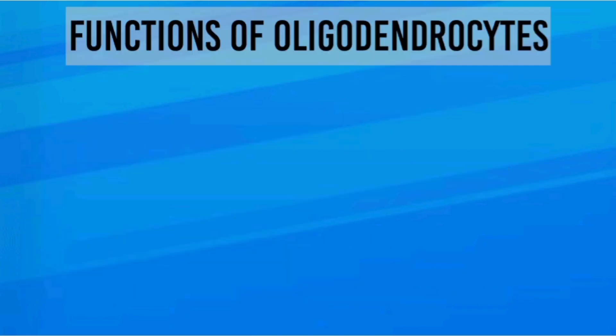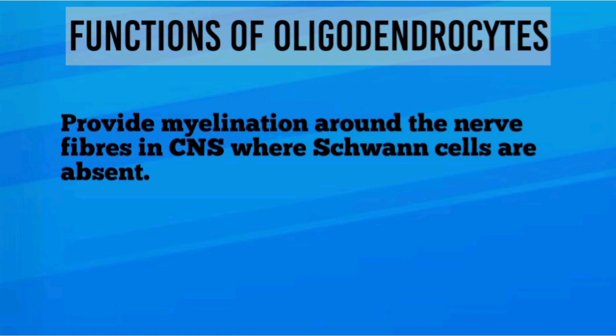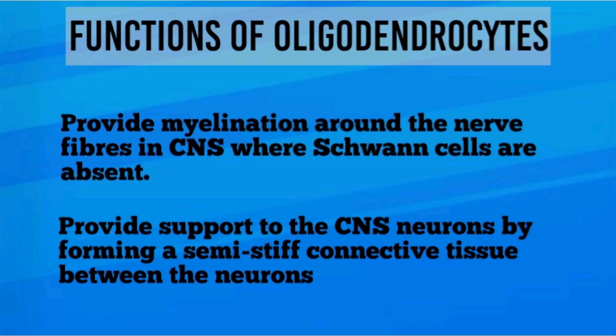Functions of oligodendrocytes: They provide myelination around the nerve fibers in the CNS where Schwann cells are absent. They also provide support to CNS neurons by forming a semi-stiff connected tissue between the neurons.